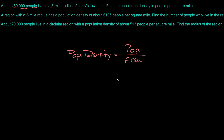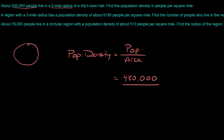Let's solve for the population density. PD is equal to the population, which is 430,000, divided by the area. Since it's telling us it's a radius, the area is a circle. We can draw a circle with a five-mile radius. The area of any circle is equal to pi r squared, so the area equals pi times five squared.